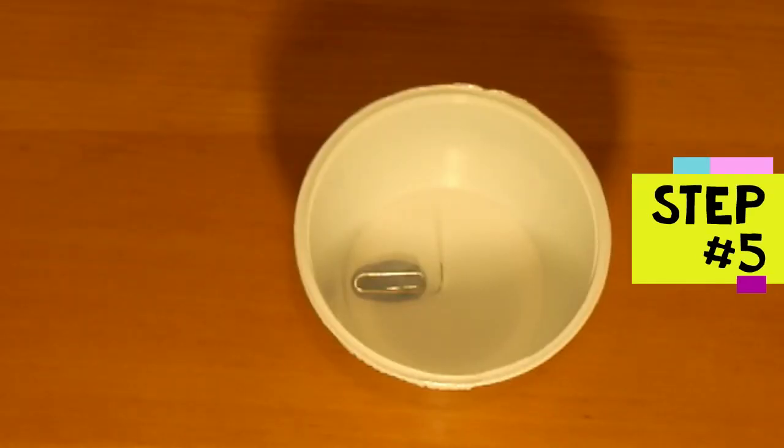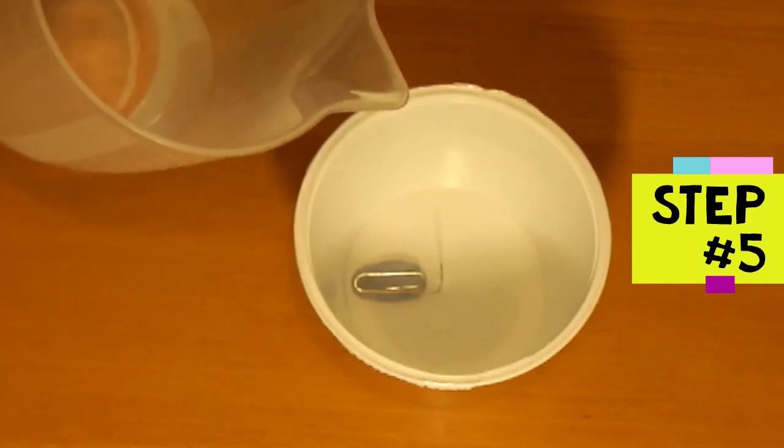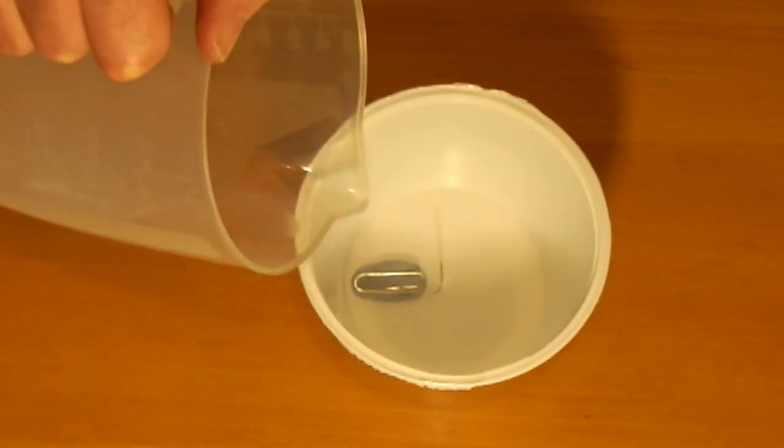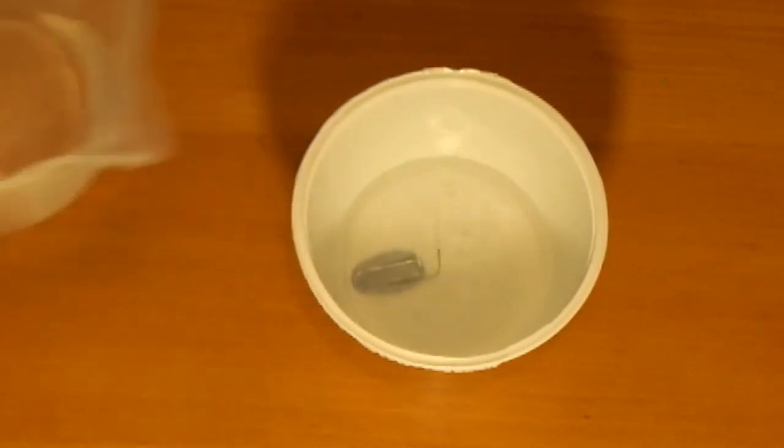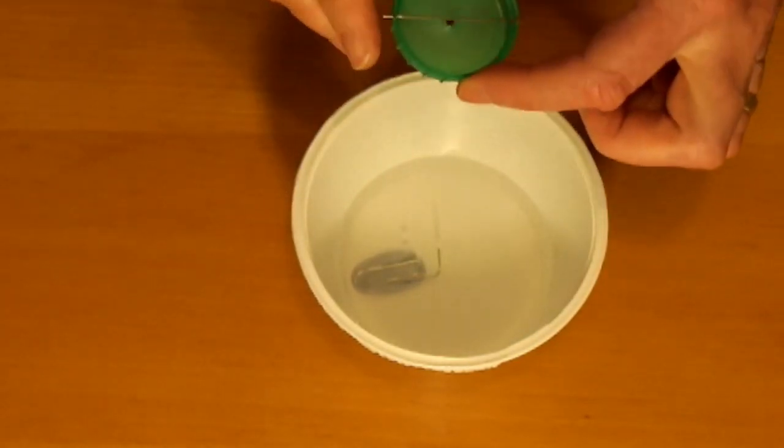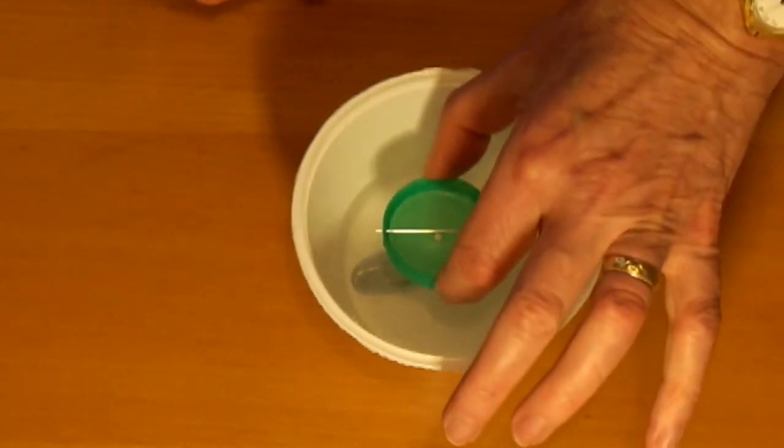Step five is to add water and fit the bottle lid. Pour water into the bowl until it comes about halfway up the leg of the paper clip. Carefully place the hole in the bottle lid over the long leg of the paper clip.